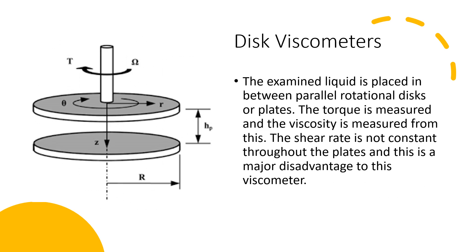Next, we have the disc viscometer. The examined liquid is placed between parallel rotational discs or plates, the torque is measured, and the viscosity is then calculated from that. However, the shear rate is not constant throughout the plates, and this is a major disadvantage of this viscometer.